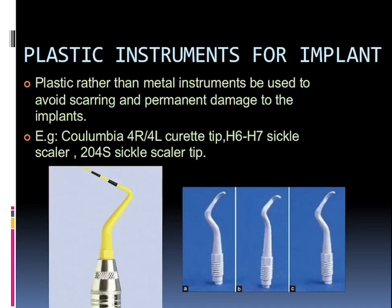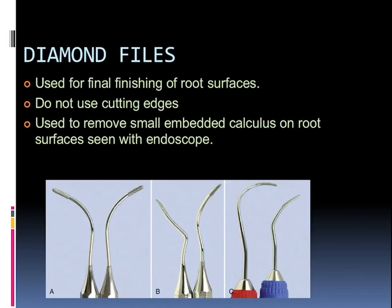Plastic instruments are used for implants. We should remember that for implants we should never use stainless steel instruments; rather, plastic instruments are used which avoid scarring and permanent damage to the implants. They can be the Columbia 4R/4L curette, H6/H7 sickle scaler, or 204S sickle scaler tip — using plastic tips. Diamond files are used for final finishing of the root surface; they do not have cutting edges and are used to remove small embedded calculus on the root surface, which is seen with an endoscope.